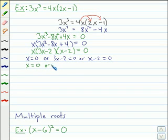And we get three solutions: zero, two-thirds, or two. So let's list them. And we've got our solutions for this second equation.